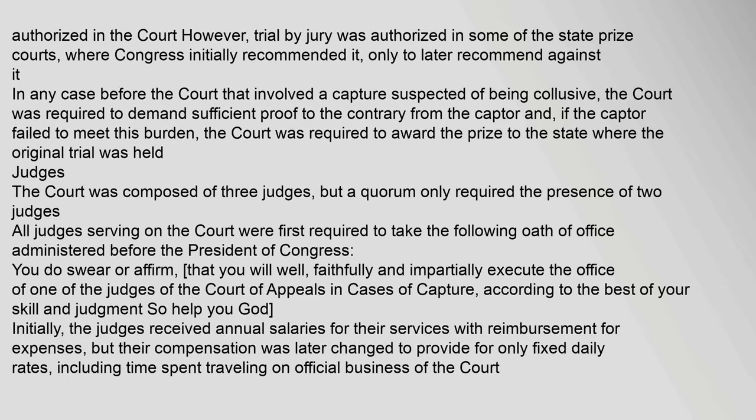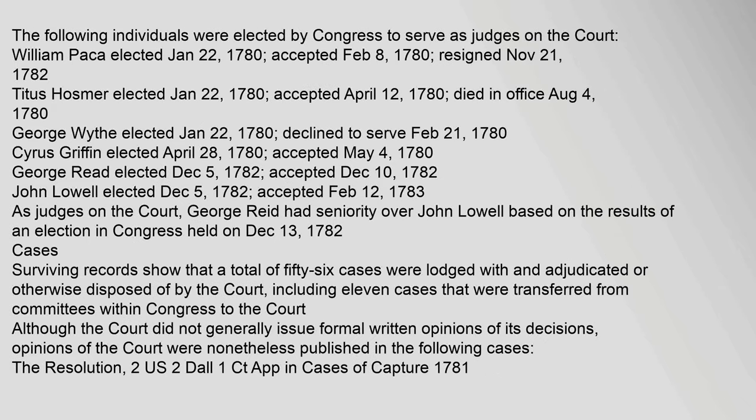The following individuals were elected by Congress to serve as judges on the court: William Paca, elected January 22, 1780, accepted February 8, 1780, resigned November 21, 1782. Titus Hosmer, elected January 22, 1780, accepted April 12, 1780, died in office August 4, 1780. George Wythe, elected January 22, 1780, declined to serve February 21, 1780. Cyrus Griffin, elected April 28, 1780, accepted May 4, 1780. George Reid, elected December 5, 1782, accepted December 10, 1782. John Lowell, elected December 5, 1782, accepted February 12, 1783. George Reid had seniority over John Lowell based on the results of an election in Congress held on December 13, 1782.